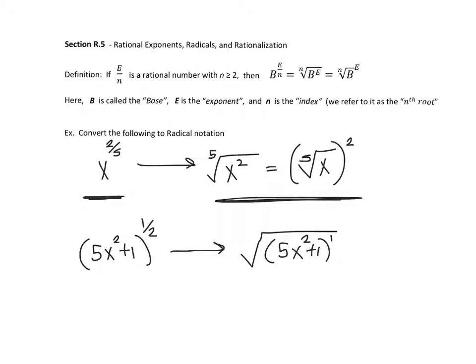Also, when you have something raised to the 1st power, there's no need to write a 1. Right here is your exponent. So the way you would want to write this answer would be the square root of 5x squared plus 1. This would be radical notation.